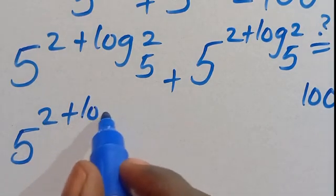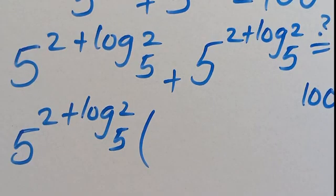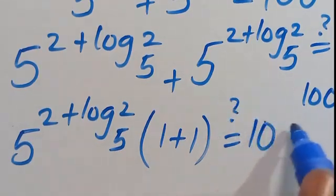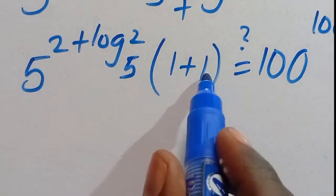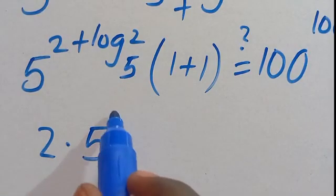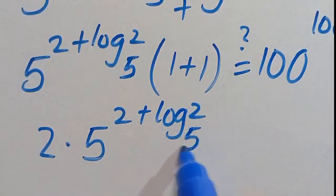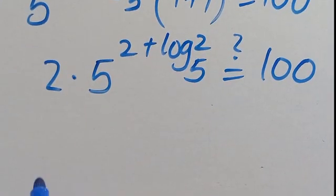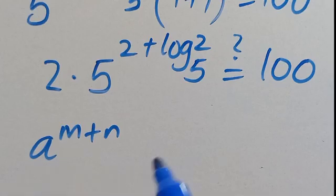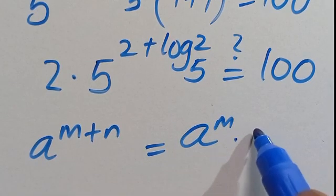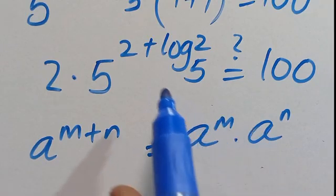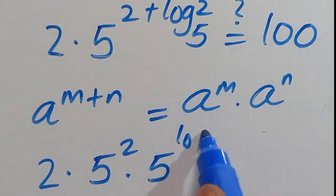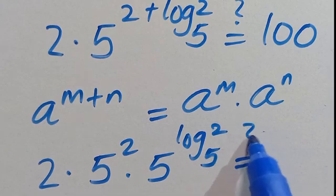We factor out 5 to the power of 2 plus log 2 in base 5, since it is common. Opening the brackets: this divided by this is 1, plus this divided by this is also 1, giving us 1 plus 1 equals 2. So we have 2 multiplied by 5 to the power of 2 plus log 2 in base 5 equals 100. Applying the index law — A to the power of M plus N equals A to the power of M multiplied by A to the power of N — we split: 2 times 5 to the power of 2, multiplied by 5 to the power of log 2 in base 5, equals 100.